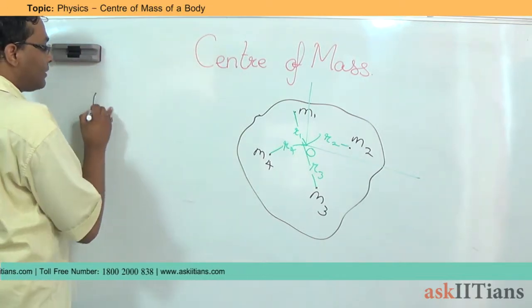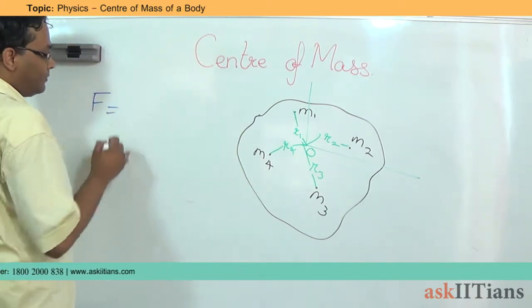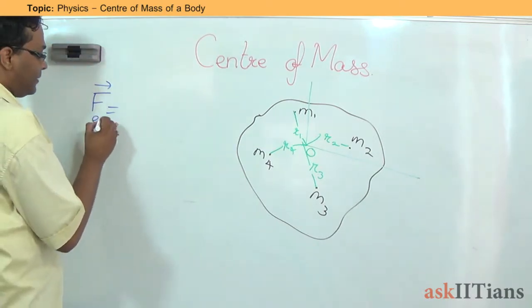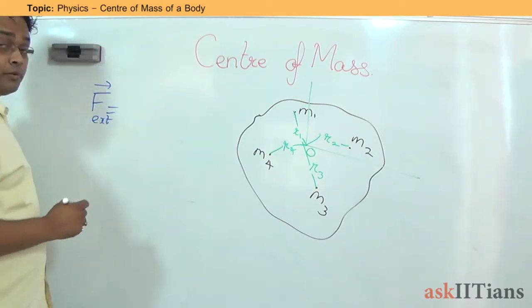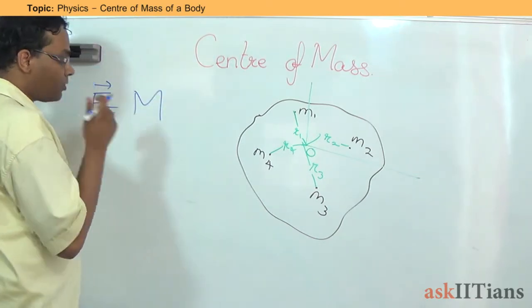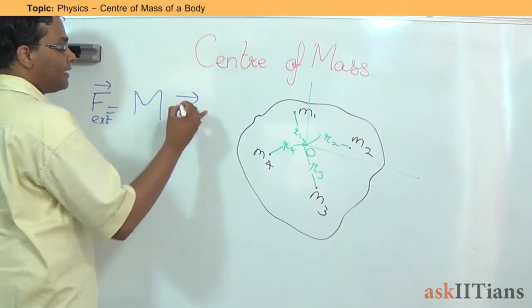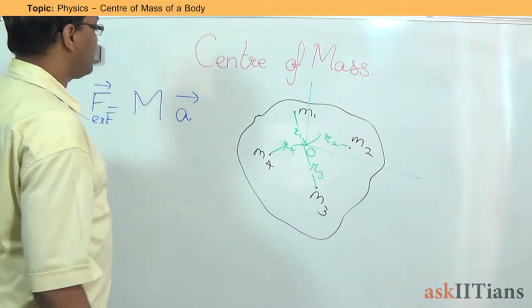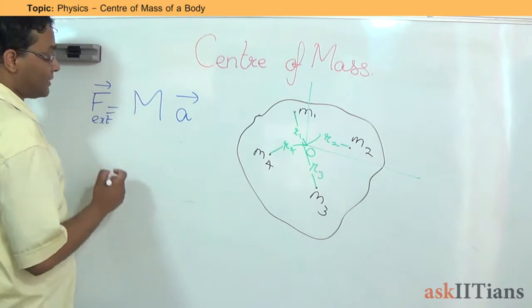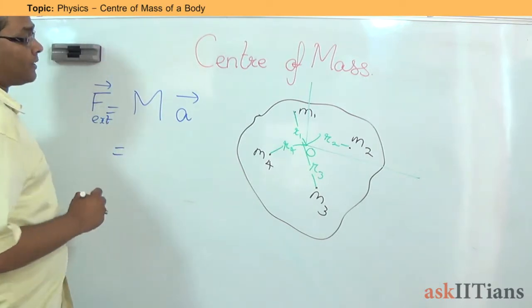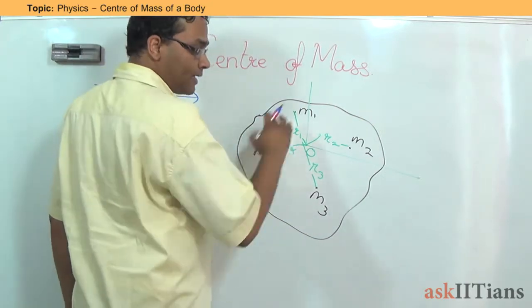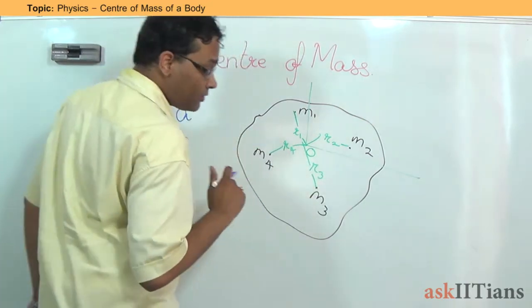So let's try to put it in mathematical terms. If I say that the external force that has been applied, please mind you I am talking about the external force, this is the total mass of the object into the net acceleration of the object. Now, if I say this is equal to mass into acceleration, what can I say further? I can say that this force can be redistributed across each of the masses.